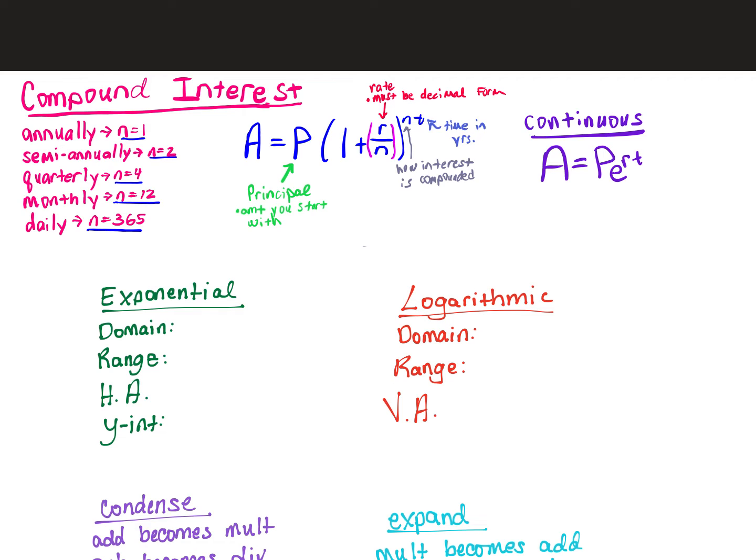Your P is the principal — the amount you start with or invest. Your rate has to be in decimal form, so move the decimal point two places to the left. Your time has to be in years. For example, six months is half a year, so T would be 0.5. If it's compounded continuously, use A = Pe^(RT), where E is from your calculator, R is rate in decimal form, and T is time in years.